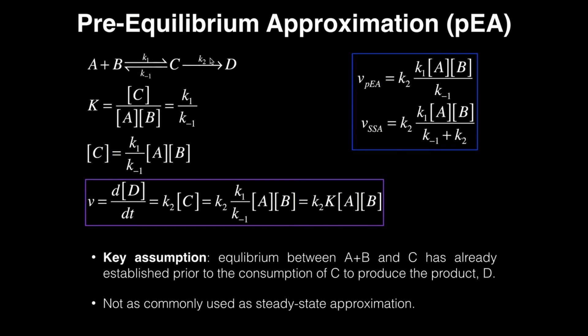Now, like I said, in the pre-equilibrium approximation we assume that there's an equilibrium established between A and B and C before any C is consumed to form the product D. That's the key assumption.